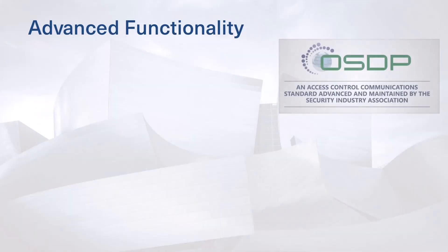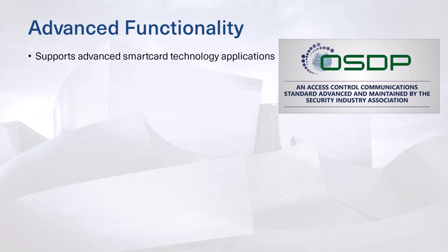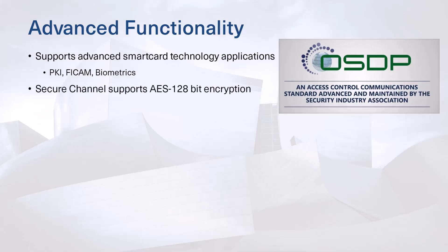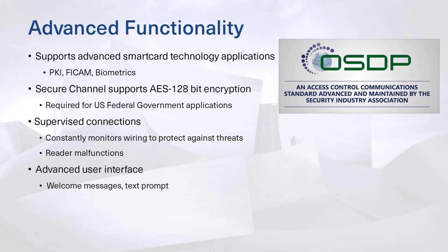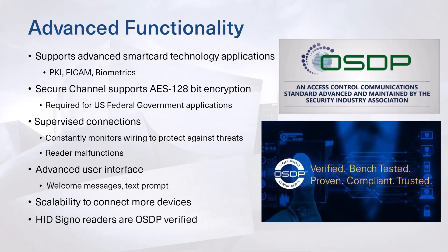OSDP supports advanced smart card technology applications including PKI, FICAM, and biometrics, as well as bidirectional communication among devices. OSDP secure channel supports high-end AES 128-bit encryption, which is required for US federal government applications. OSDP constantly monitors wiring to protect against attack threats and warn of reader malfunctions. Advanced user interfaces are supported, including welcome messages and text prompts. OSDP also brings the scalability to connect more devices, and all Cigna readers are OSDP verified by the Security Industry Association.